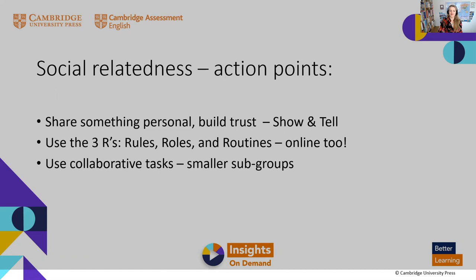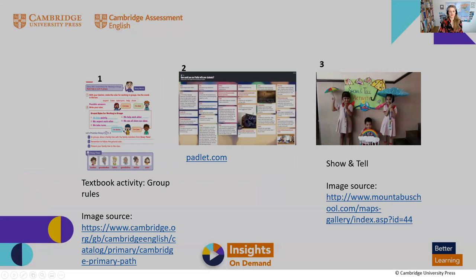The third action point for supporting social relatedness is to use collaborative tasks as much as possible. Using smaller groups or even just pairs is a really good way to strengthen bonds between learners, and also teaches students collaboration skills — a key life competency. A few examples of activities that strengthen social relatedness: setting up group rules, using the Padlet tool for whole class collaboration and to visually represent a group identity, and sharing something personal in a show and tell type of activity.